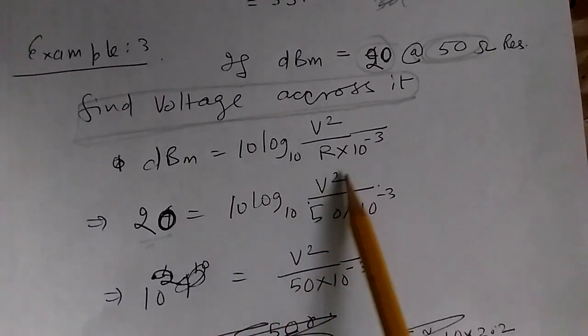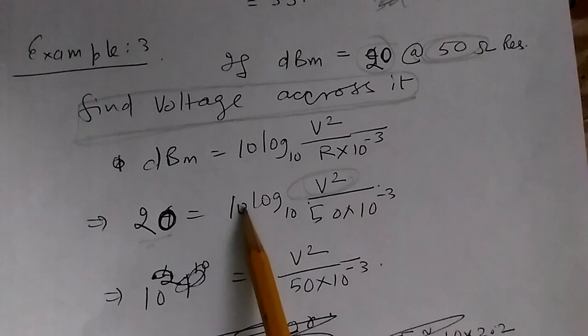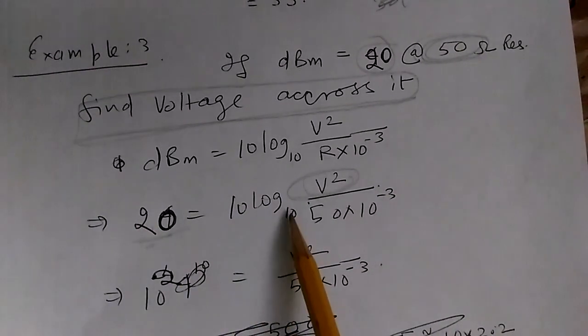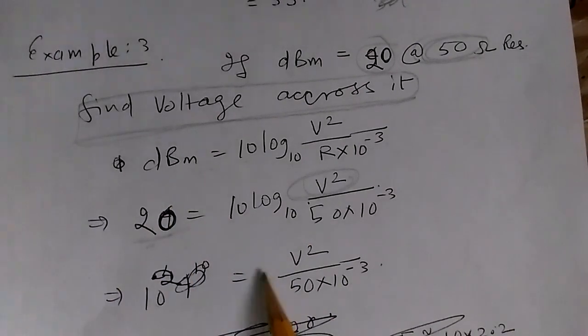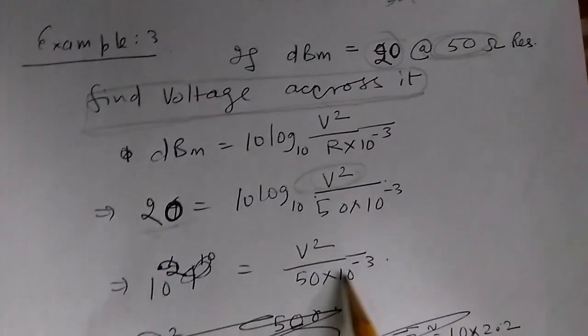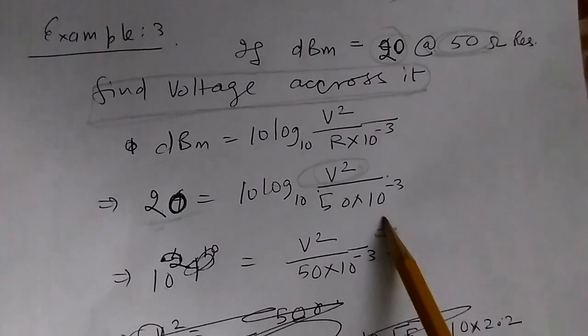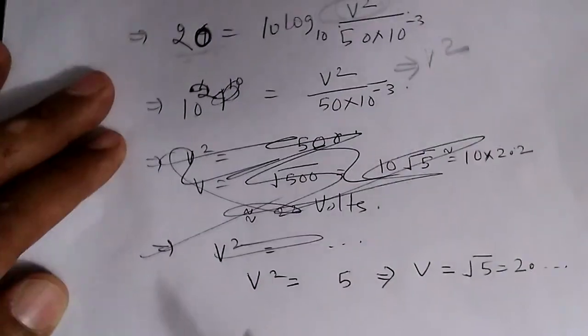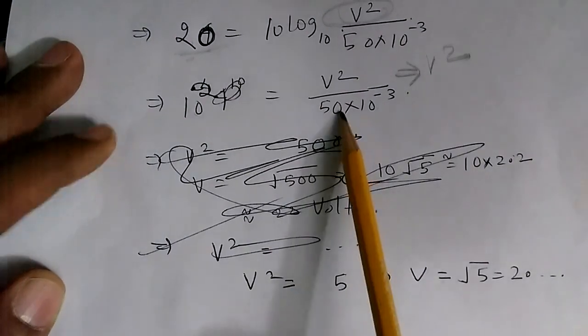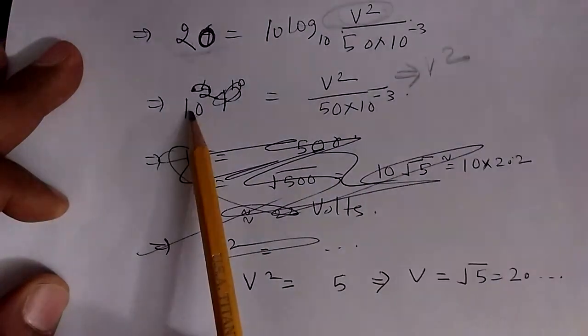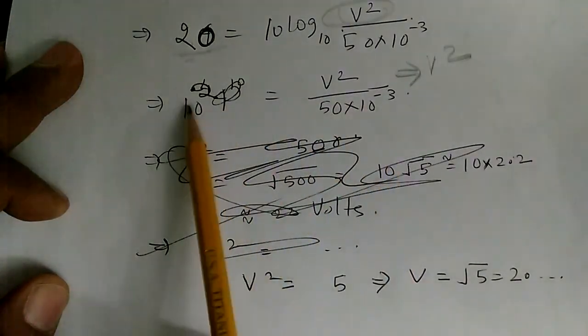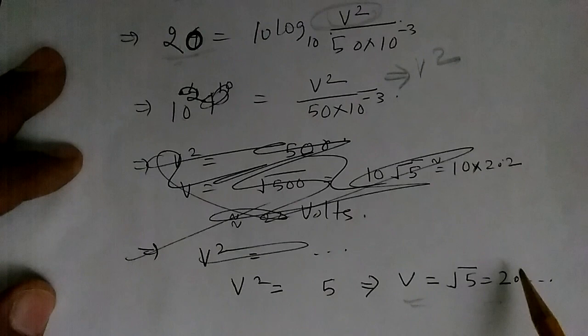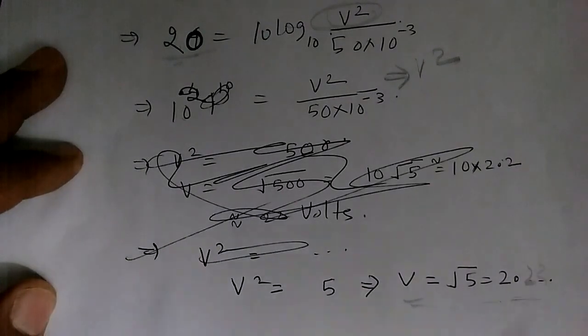We need to find V². Dividing 20 by 10 gives 2, so 10² = V² / (50 × 10⁻³). From here, we can find V². Since 10⁻³ × 10² = 10⁻¹, we get V² = 5, and V ≈ 2.23 volts or so.